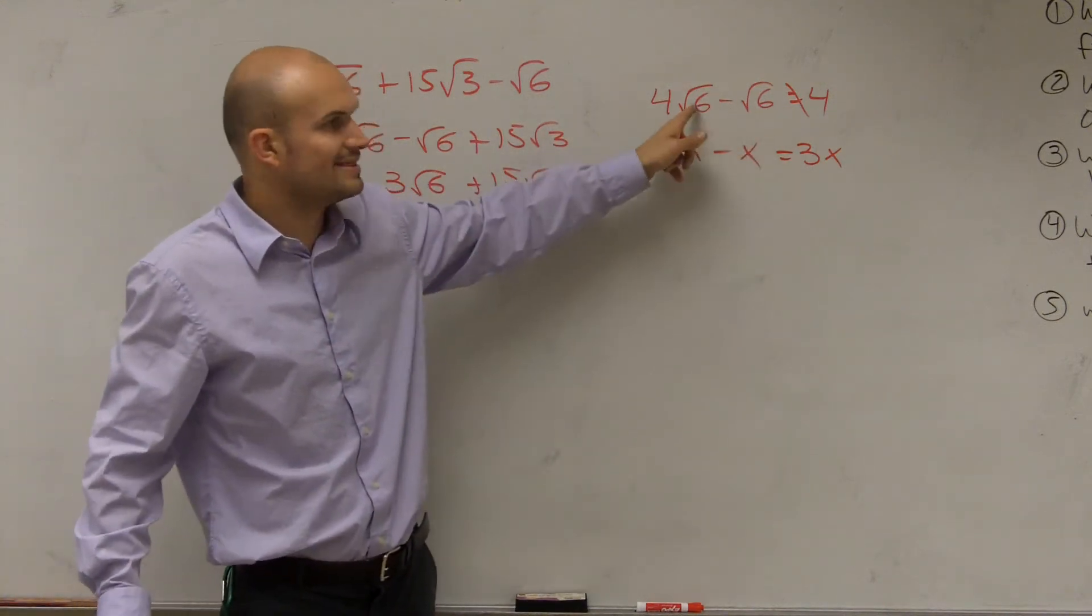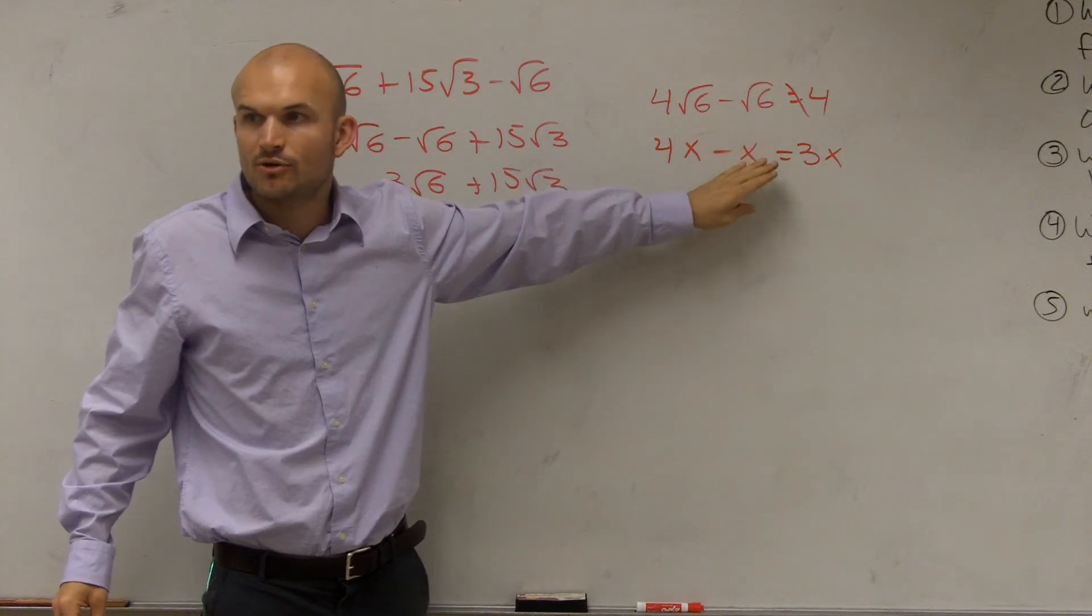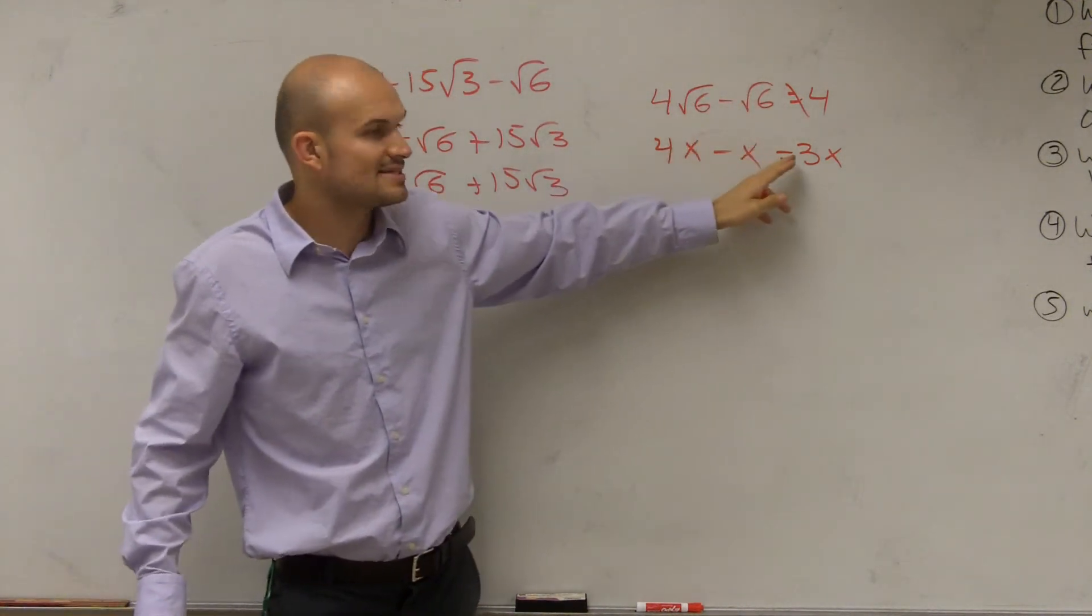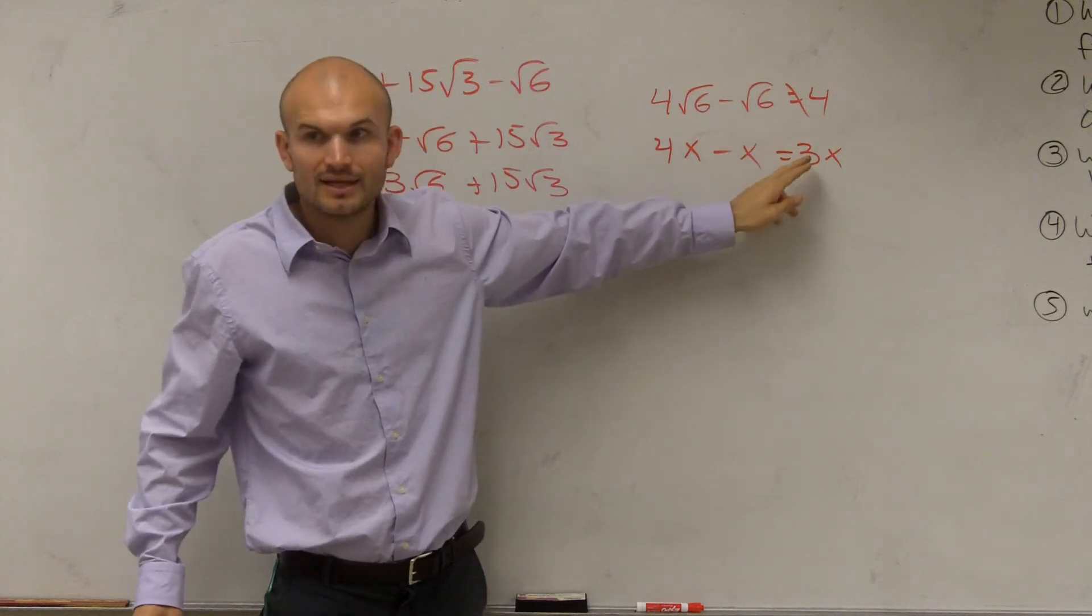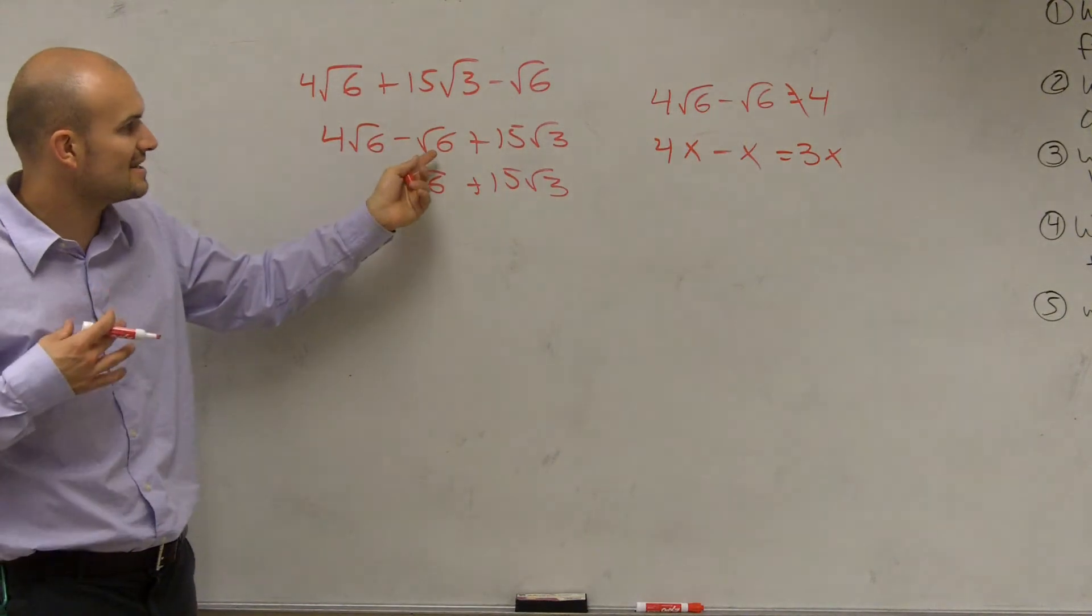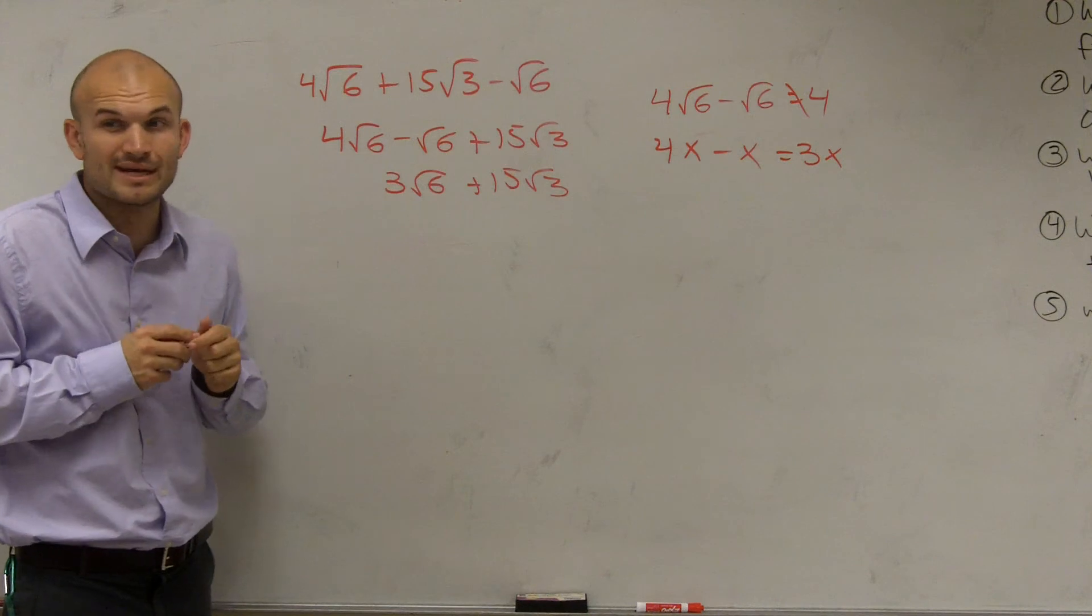Okay, so does everybody understand why this does not work? Remember, it's just like what we did with binomials. So 4x minus x does not equal 3, it equals 3x. So 4 radical 6 minus square root of 6 is going to equal 3 square root of 6, plus 15 radical 3.